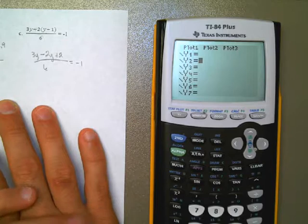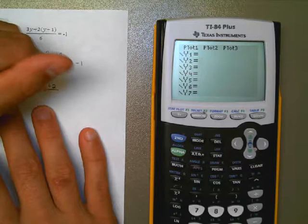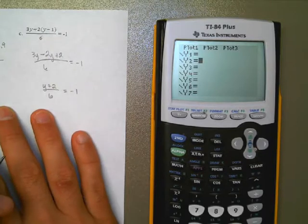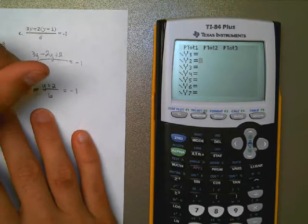Now the next step is, I see I have a 3y minus 2y, so I can go ahead and say that's y plus 2. That's all over 6, and that's equal to negative 1. And so now comes the point when, if I didn't do it earlier, I need to multiply both sides by 6.